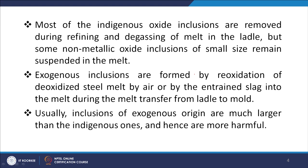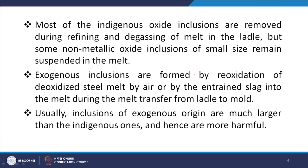The second variety is exogenous inclusions, formed by the reoxidation of the deoxidized steel melt by air, or by entrained slag into the melt during melt transfer from the ladle to the mold. These inclusions of exogenous origin — formed because of reoxidation or slag entrainment — are normally much larger than the indigenous ones and are very harmful.